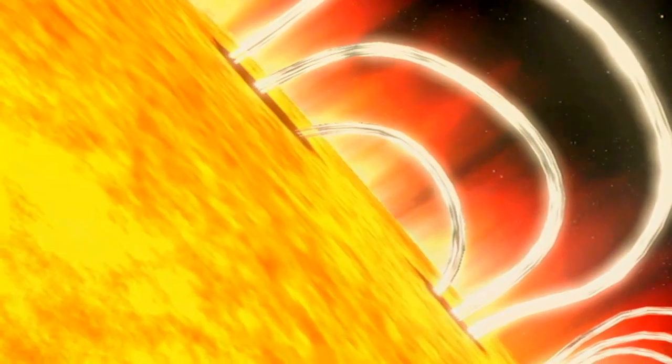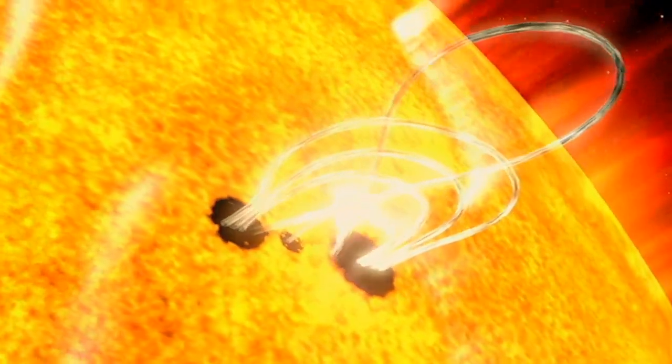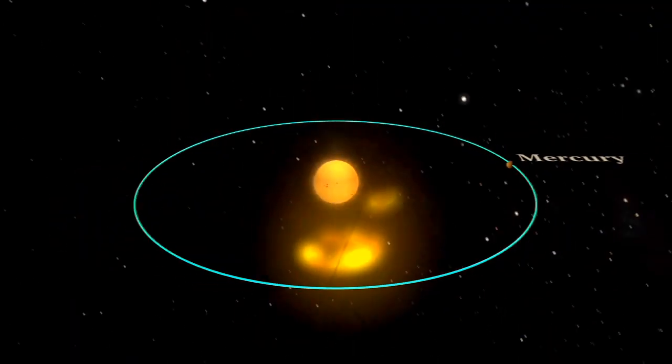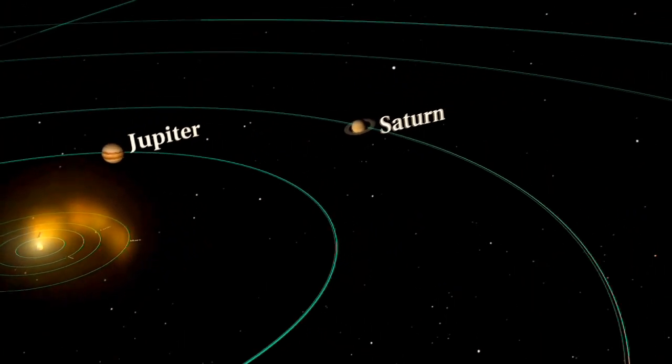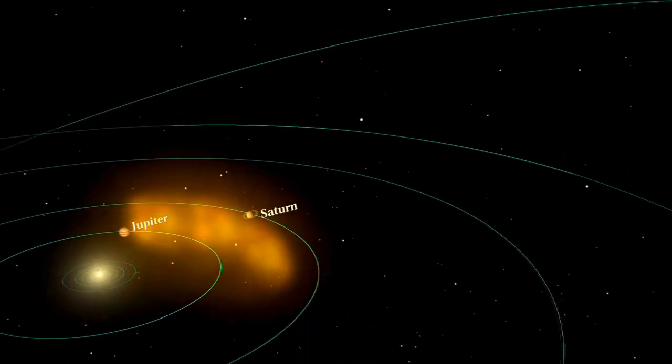The number of sunspots is important because sunspots are the visual markers of where powerful magnetic fields have emerged from the Sun's interior. These magnetic fields power solar flares and coronal mass ejections, which can affect Earth and other objects in the solar system. As the sunspots increase, so does the frequency and severity of flares and CMEs.